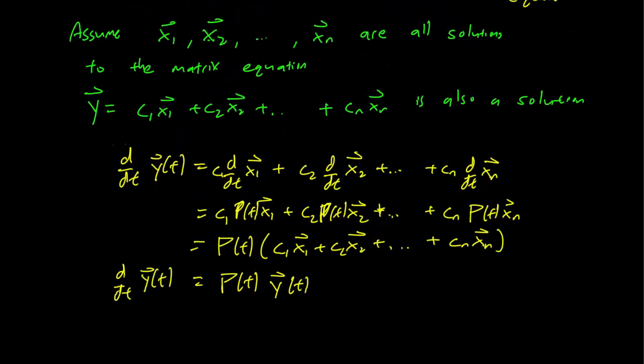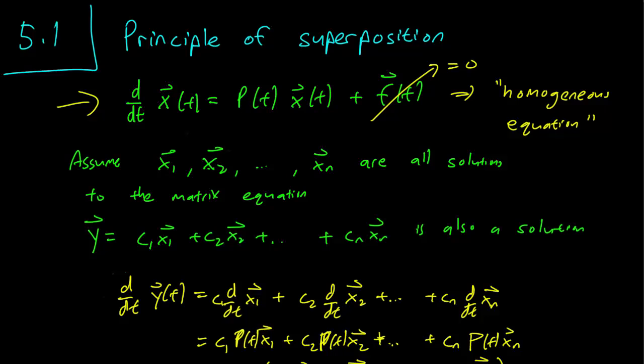Right, so if we have solutions x1, x2, x3, any combination of those solutions will also be a solution if the equation is homogeneous. This doesn't work at all if F(t) is something that's nonzero.